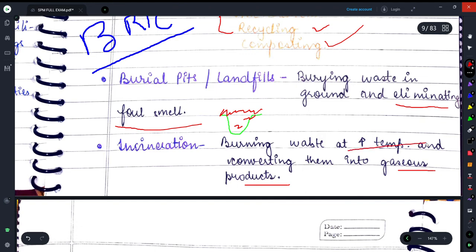So what is incineration? It is a process of converting waste into gaseous products, and high temperature is used for this. Now friends, I had a doubt that you can also help clear.